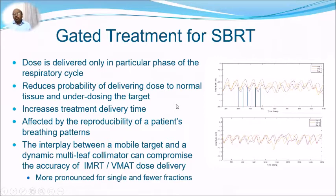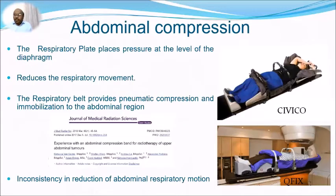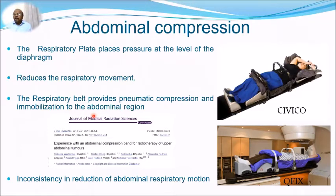Abdominal compression uses a plate placed at the level of the diaphragm to reduce respiratory motion. However, studies show there is inconsistency in the reduction of abdominal respiratory motion — it is not the same every day — so one must ensure the compression is applied to the same level each day to achieve consistent motion reduction.